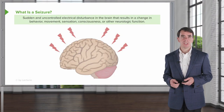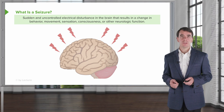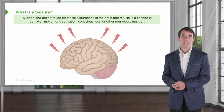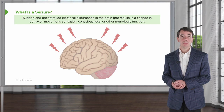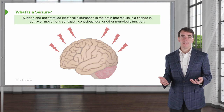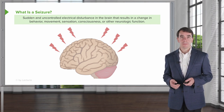What is a seizure? It's a sudden, uncontrolled electrical disturbance in the brain that results in a change in behavior, movement, sensation, consciousness, or some other neurologic function.